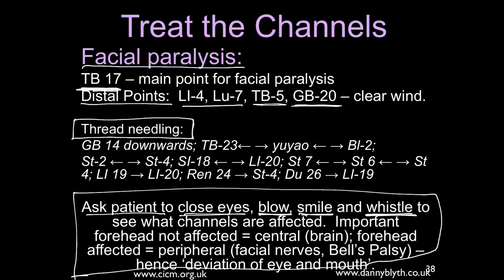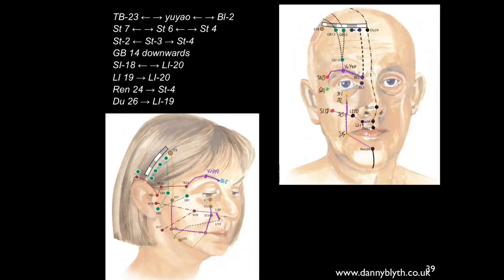Learning practical skills is essential — if you haven't got those, you shouldn't be doing this style of treatment. Thread needling examples include: Triple Burner 23 towards Yu Yao, Yu Yao towards Triple Burner 23, Yu Yao towards Bladder 2, Bladder 2 towards Yu Yao. We might also needle Stomach 7 to Stomach 6, Stomach 6 to Stomach 4, Stomach 2 to 3 to 4, Gallbladder 14 downwards towards Yu Yao, Small Intestine 18 towards Large Intestine 20, Ren 24 towards Stomach 4, Stomach 4 towards Ren 24, and Du 26 to Large Intestine 19.